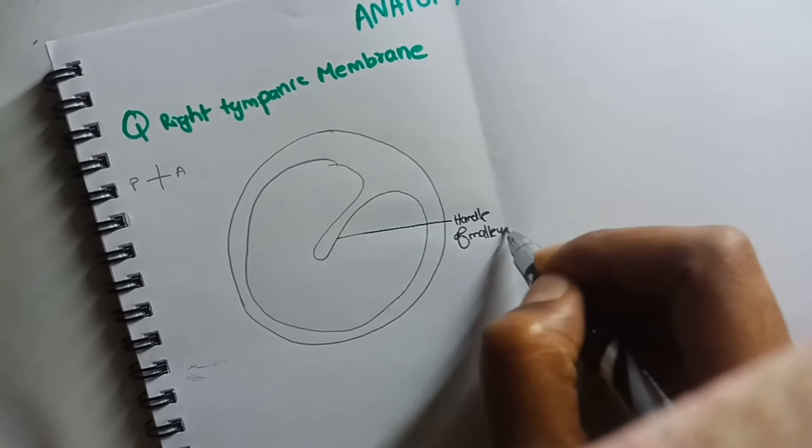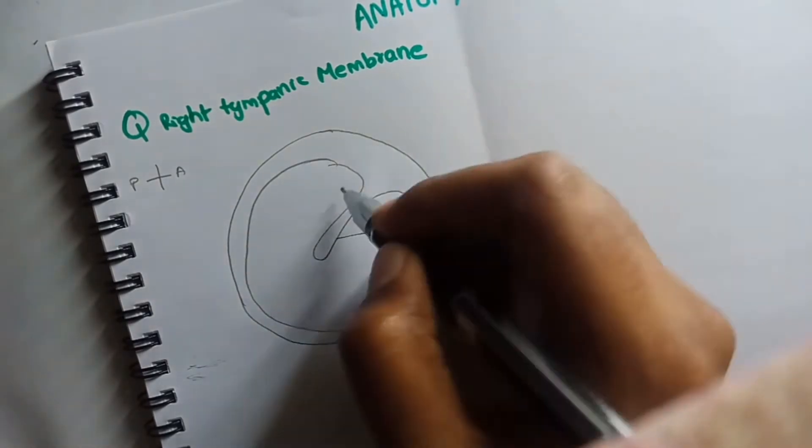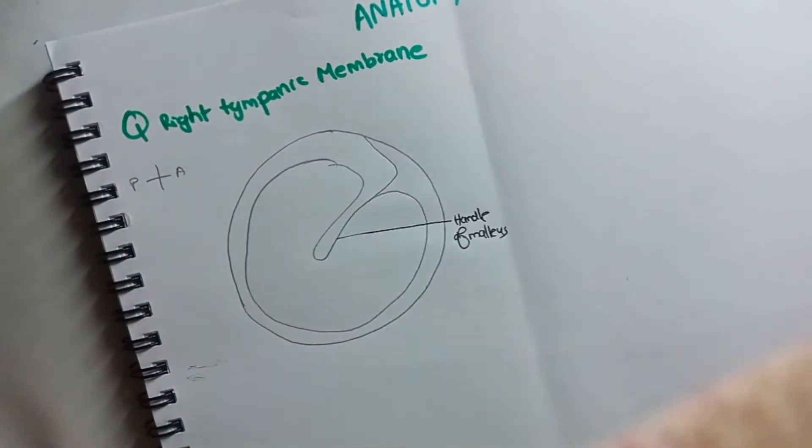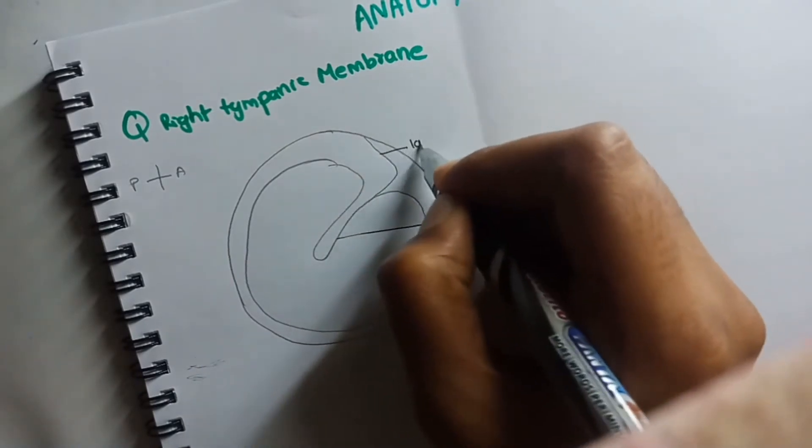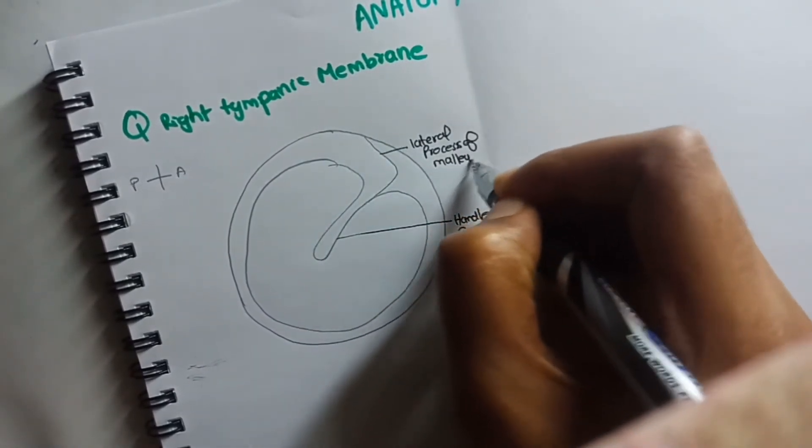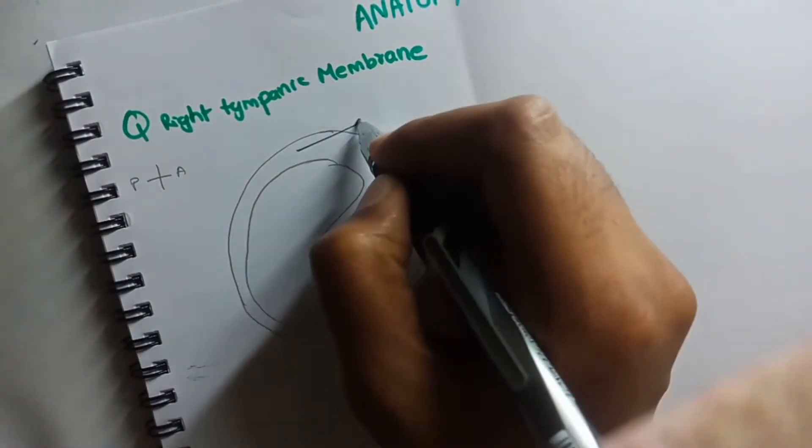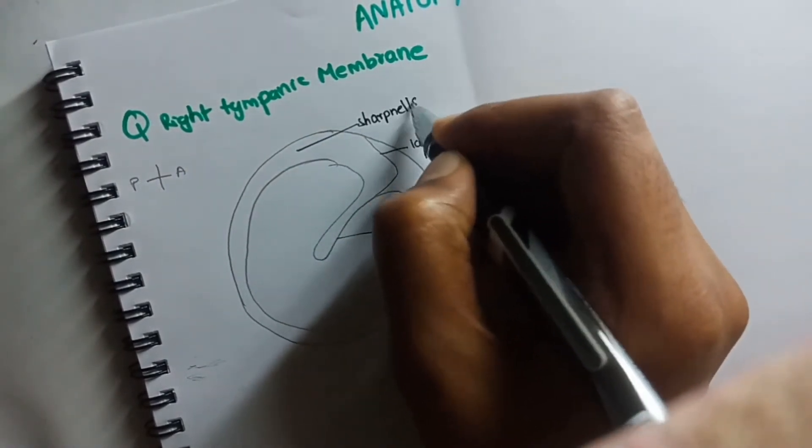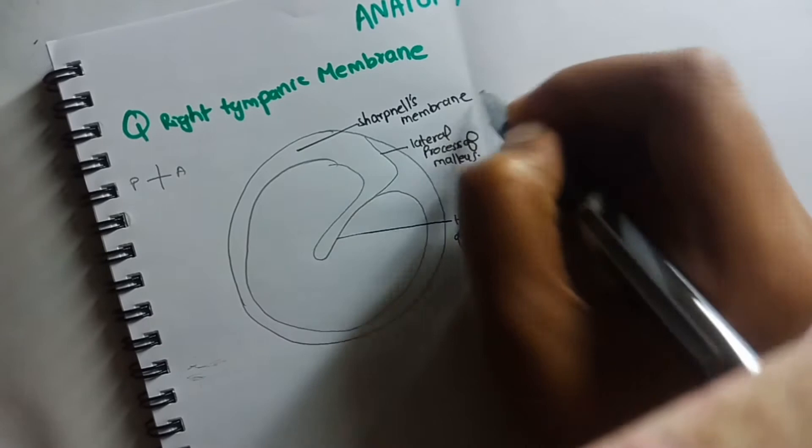of malleus. And along with that, we can remember it is called the lateral process of malleus. So there is the handle of malleus and lateral process of malleus, and then there is Shrapnell's membrane, which is the pars flaccida, which is located peripherally.